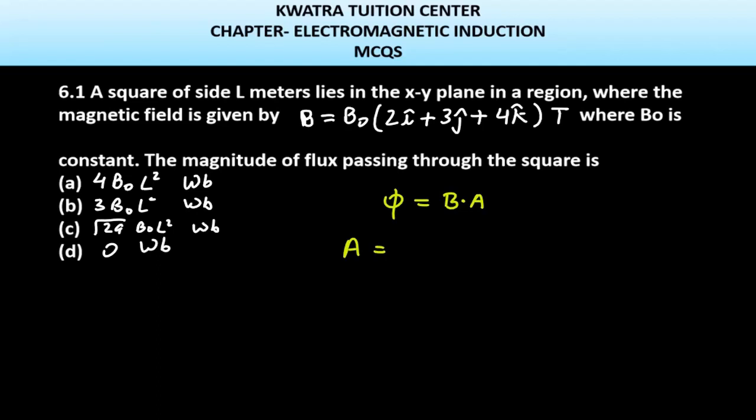Why is the area in the Z direction? Because the area vector is always perpendicular to the plane. So it is L²k̂. We need to find the value of φ = B·A.